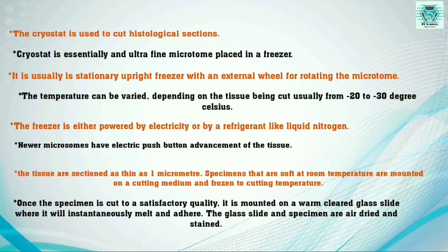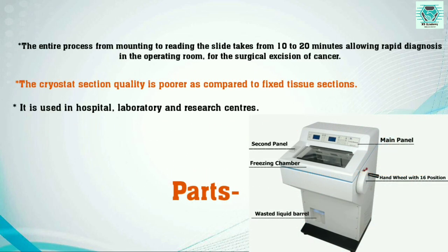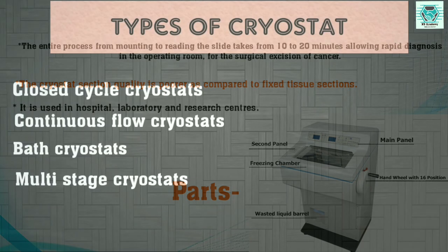Tissues are sectioned as thin as one micrometer. Specimens that are soft at room temperature are mounted on a cutting medium and frozen to cutting temperature. Once the specimen is cut to a satisfactory quality, it is mounted on a warm cleared glass slide. The entire process from mounting to reading the slide takes 10 to 20 minutes, allowing rapid diagnosis in the operation room for the surgical assessment of cancer. This is the main importance of the cryostat — sections can be obtained very quickly.